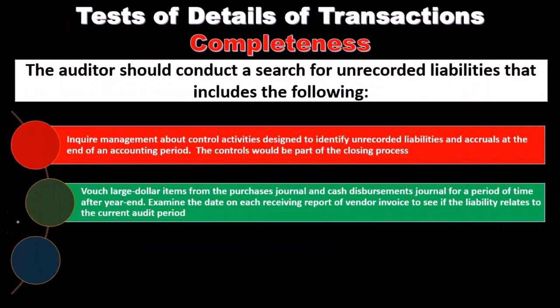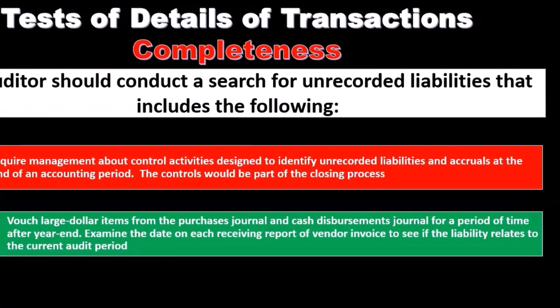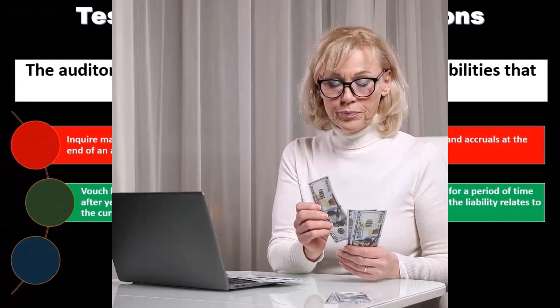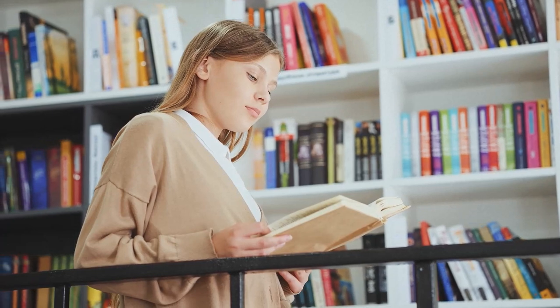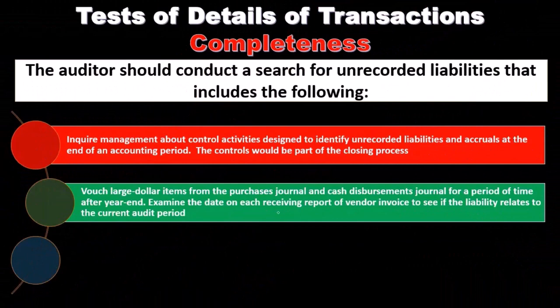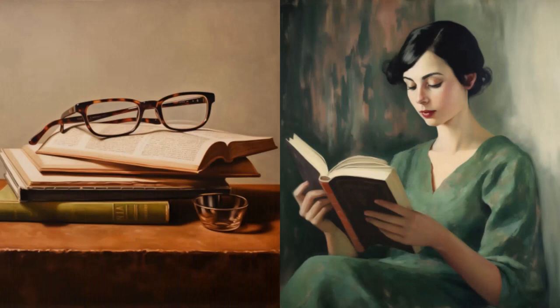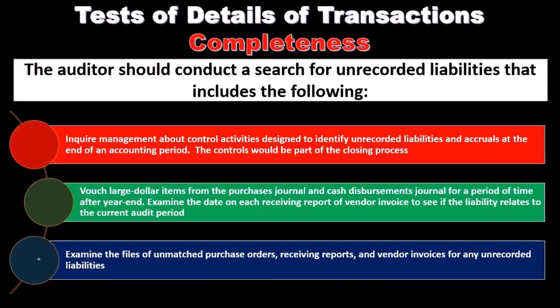Examine the data on each receiving report or vendor invoice to see if the liability relates to the current audit period. The receiving report is typically the triggering factor — it indicates when we actually received the item. We want to confirm the item was put on the books in the correct time period, in accordance with the receiving report date. We can check transactions after year end to verify the item was recorded in the period when the receiving report occurred.